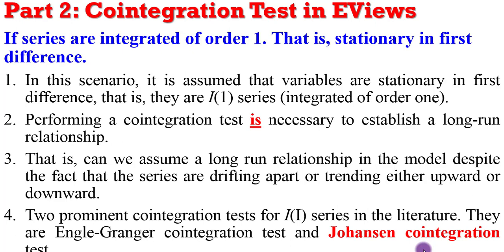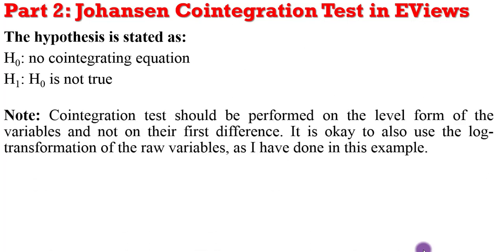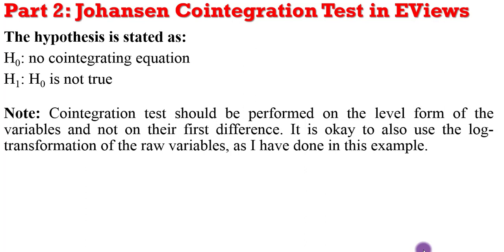In the literature, there are two co-integration tests that can be performed: the Engle-Granger co-integration test and the Johansen co-integration test. In this tutorial, I am only going to focus on the Johansen co-integration test. An important thing to note is that the variables you use must be in their level form and not in their first difference. It is also acceptable to use the log transformation of the raw variables, as done in this example.